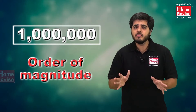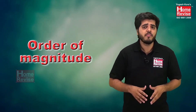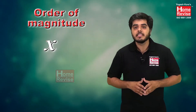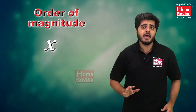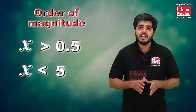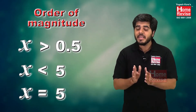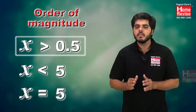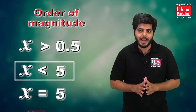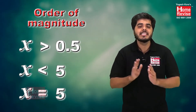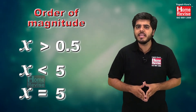I am going to simply tell you the basic concept of how to calculate the order of magnitude of a given quantity. The first basic rule is: if my value is x, then x should always be greater than 0.5 and less than or equal to 5. This is the range of x. So let us learn with the help of an example.